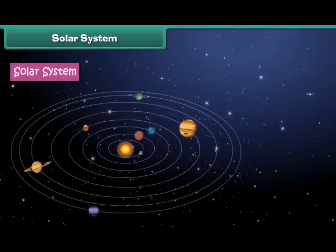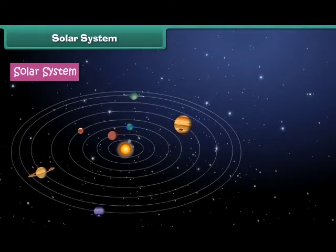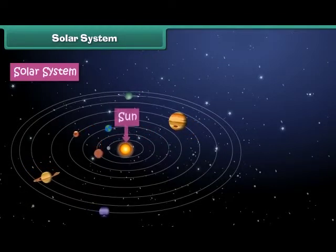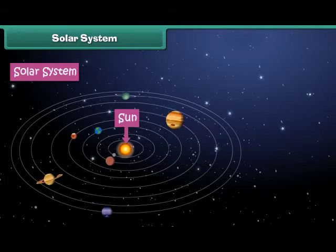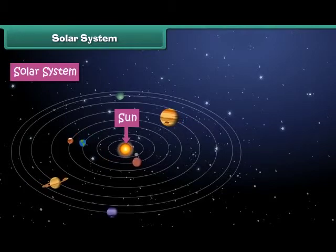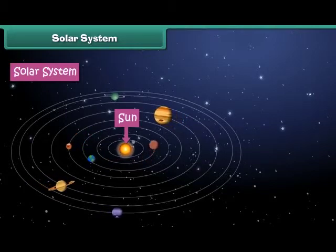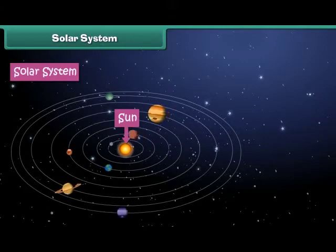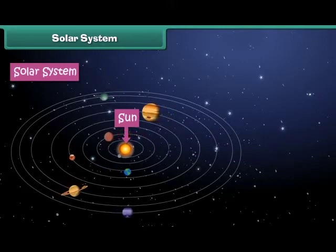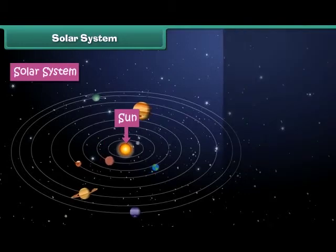We live in the solar system. The solar system is the family of the Sun and its eight planets. In the solar system the Sun is placed at the center and the eight planets revolve around it.